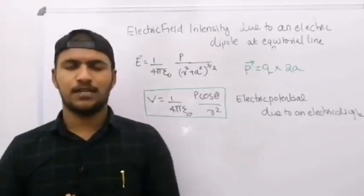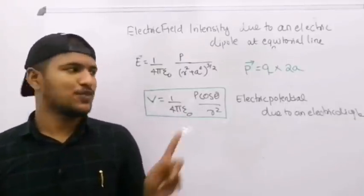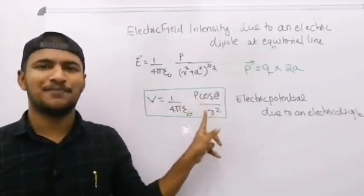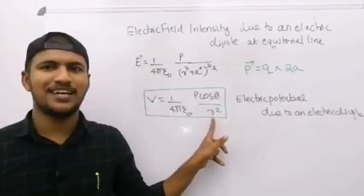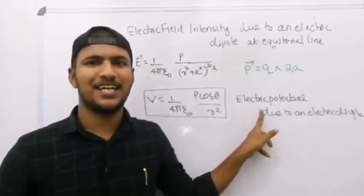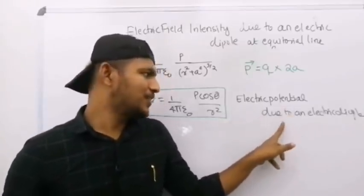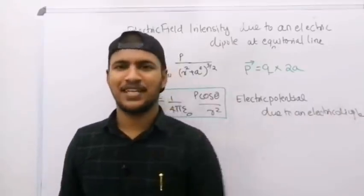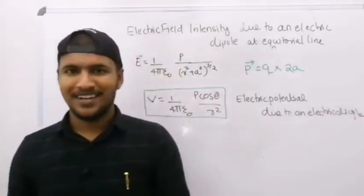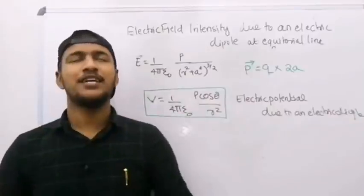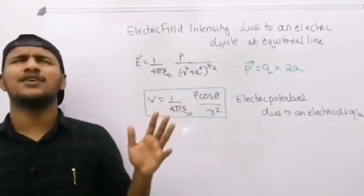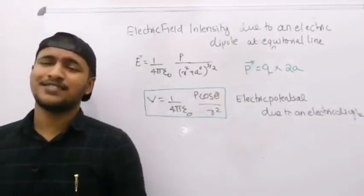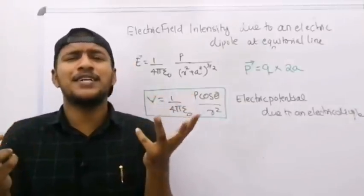Electric potential V is equal to 1 by 4 pi epsilon 0, P cosθ by R square, is equal to V. Electric potential due to dipole. Is equal to 1 by 4 by epsilon 0, P by R square plus A square all raised to 3 by 2.